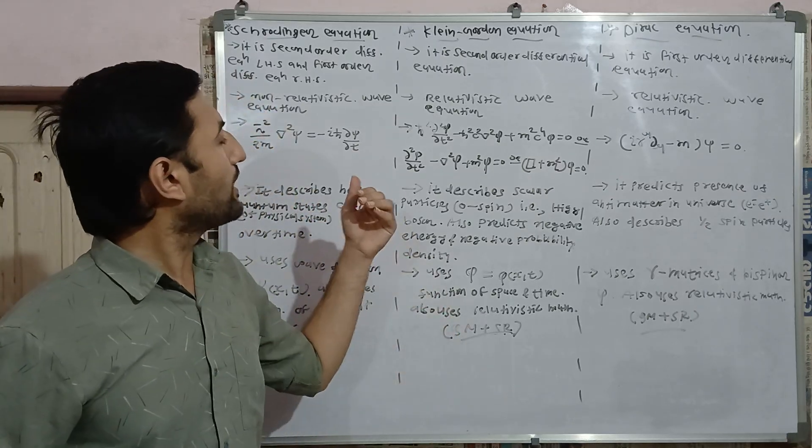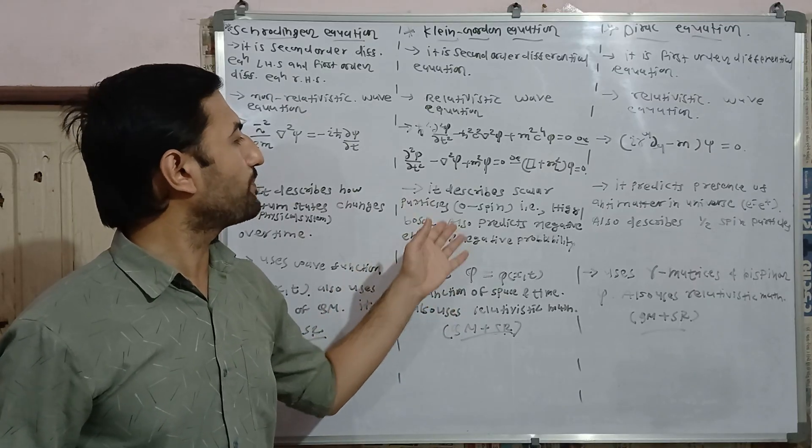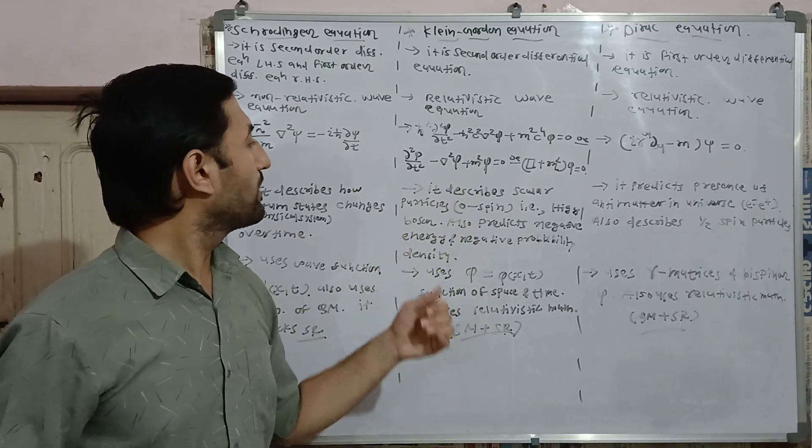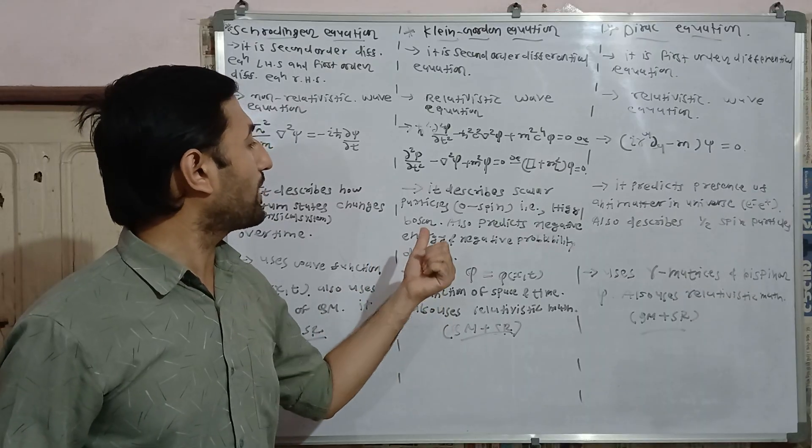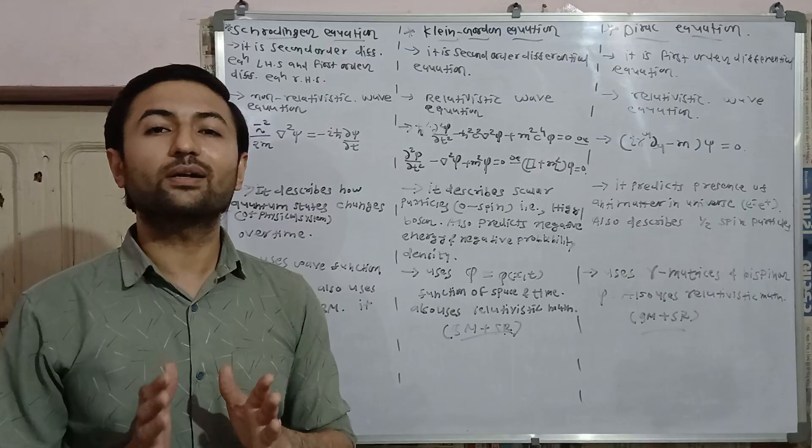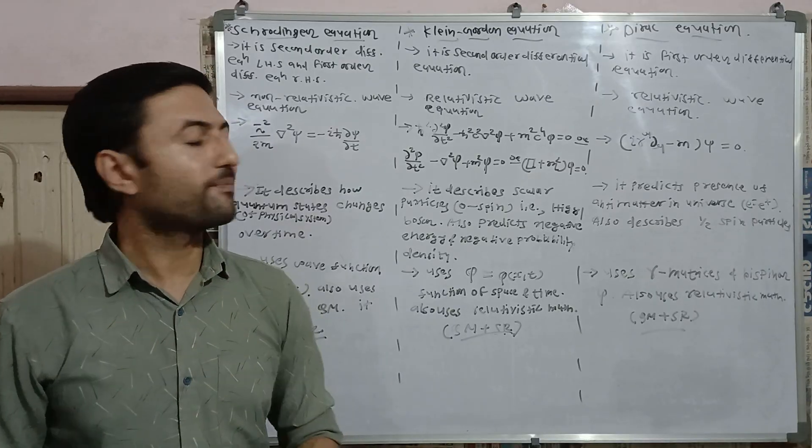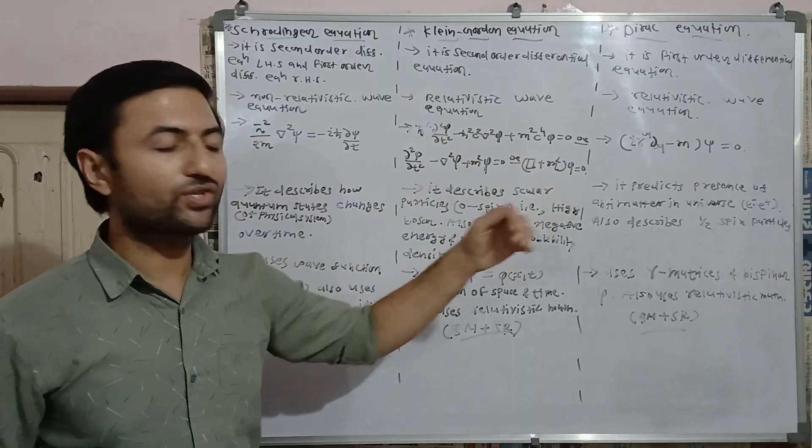While Klein-Gordon equation describes scalar particle having zero spin, for instance Higgs boson, but it predicts negative energy and negative probability density which is a bit difficult to accept as it is mathematical anomaly which is removed in Dirac equation.